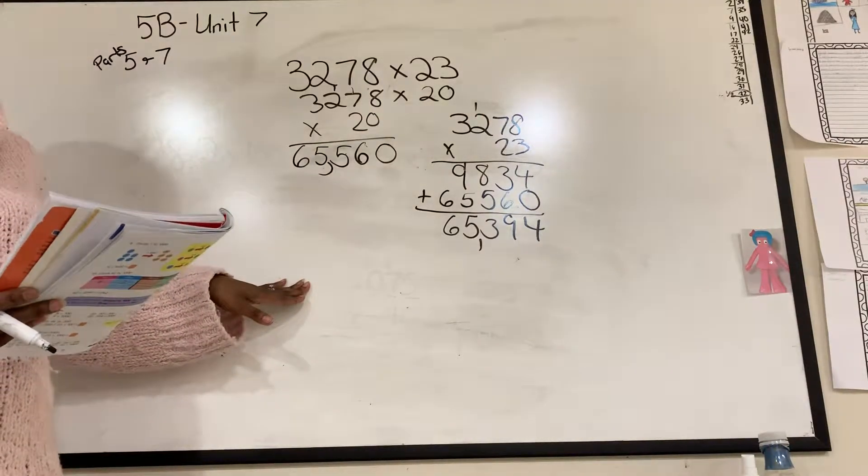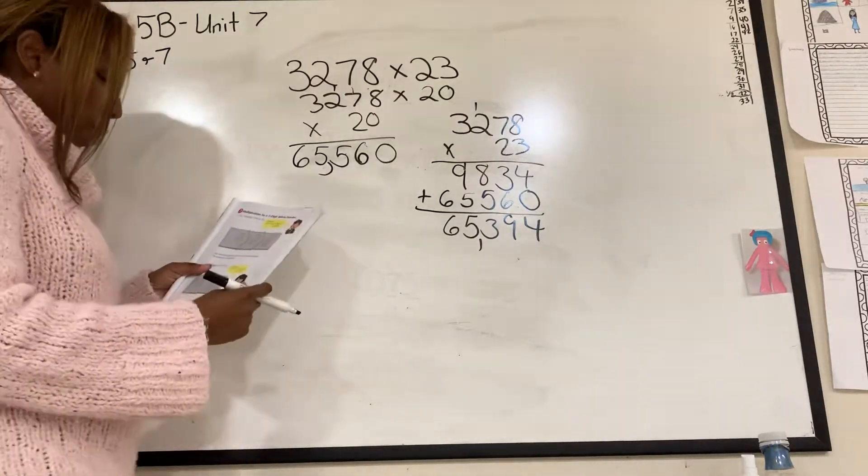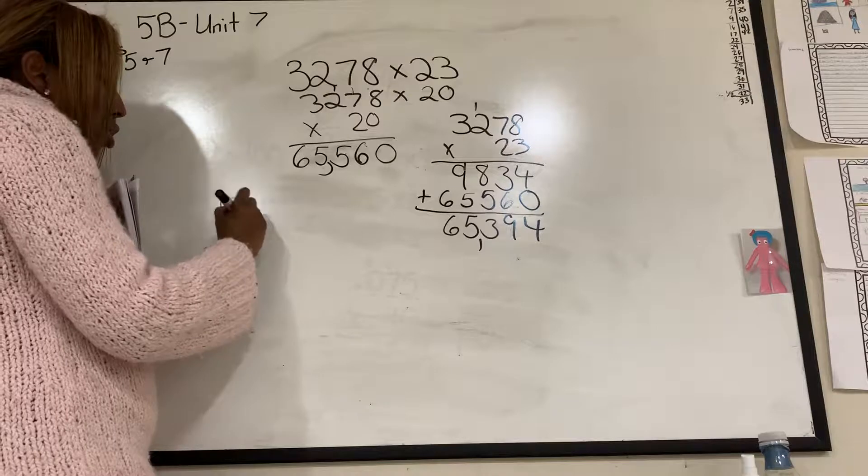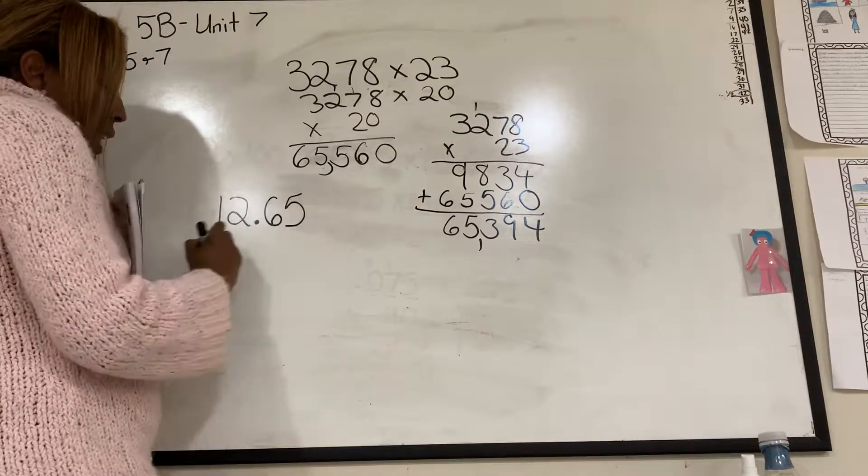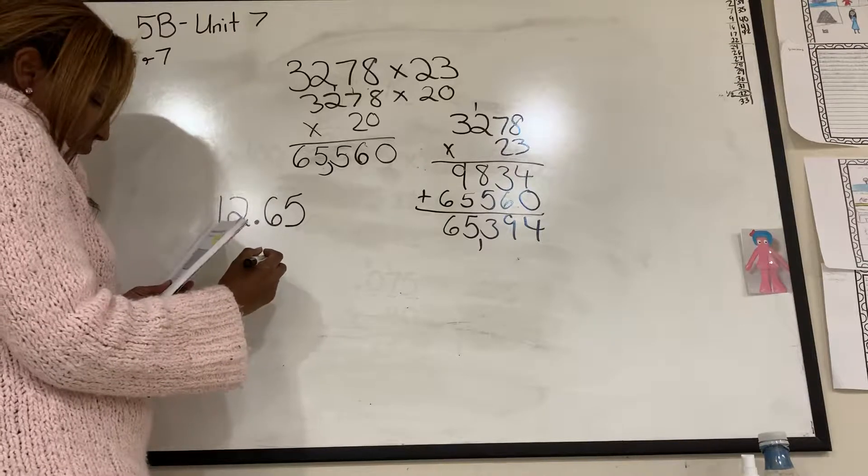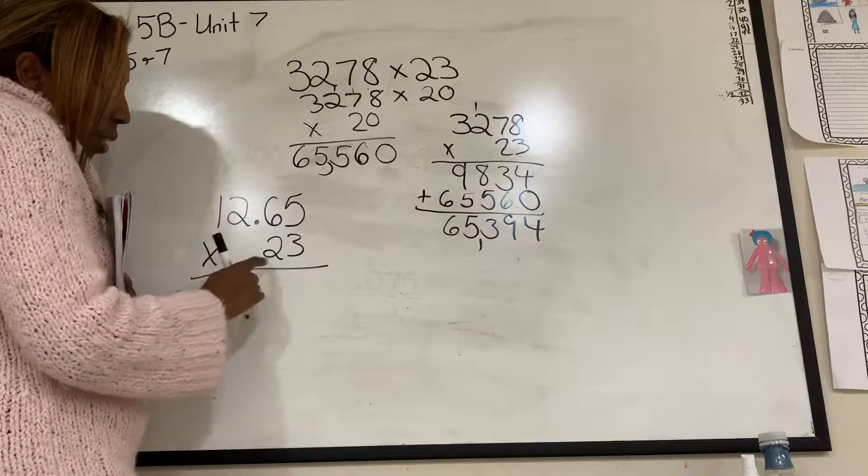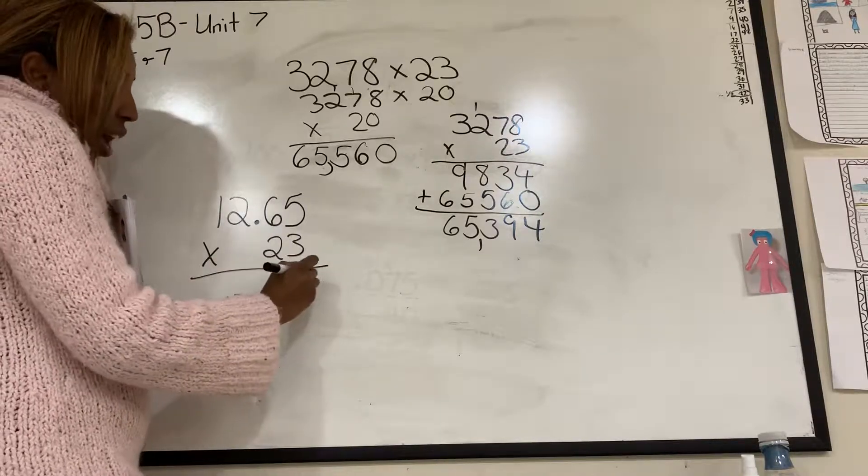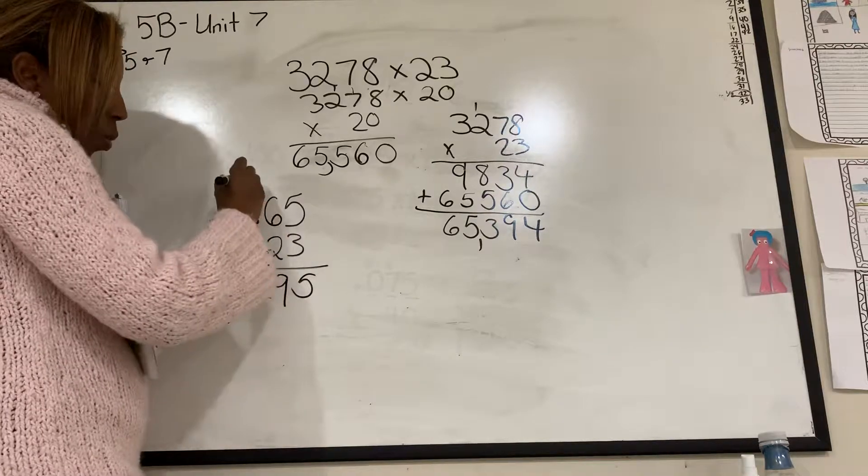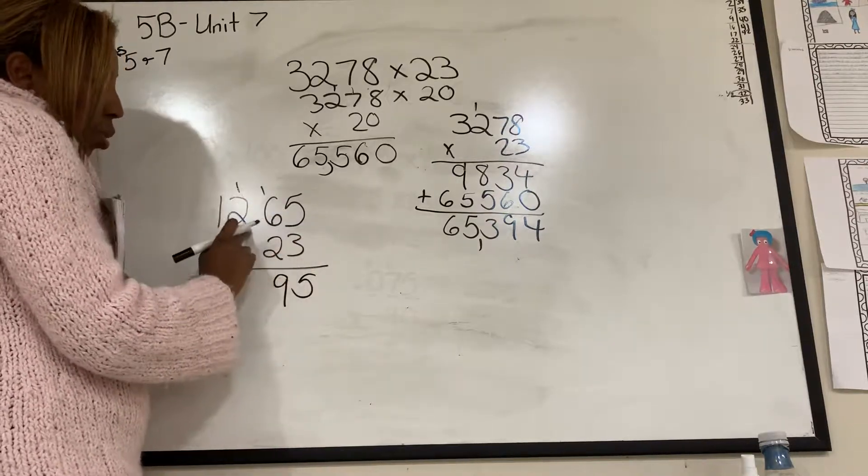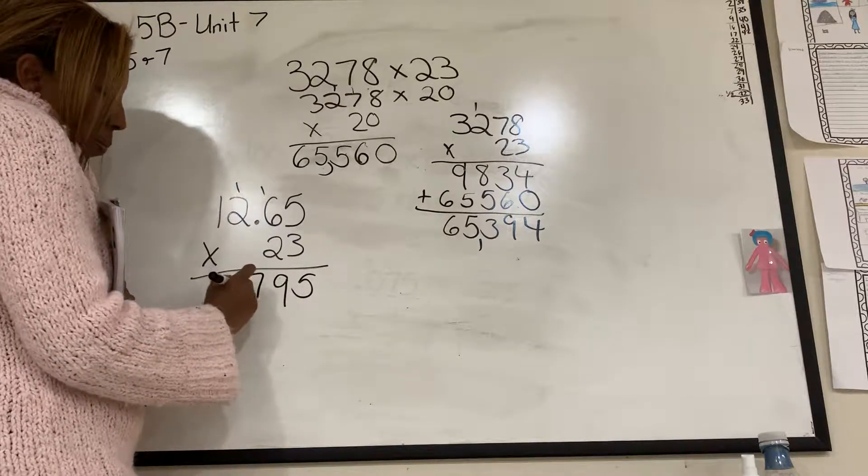Now we're adding decimals. Okay? So let's take the same type of problem. Let's do 12.65. And we're going to times that by 23. Now, we're going to do 3 times 5 is 15, carry the 1. 6 times 3 is 18, plus 1 is 19, carry the 1. Notice how I'm going like that. 3 times 2 is 6, plus 1 is 7. 3 times 1 is 3.